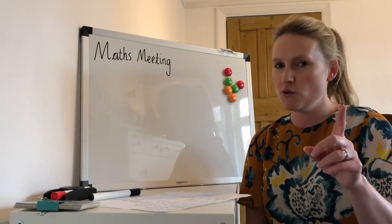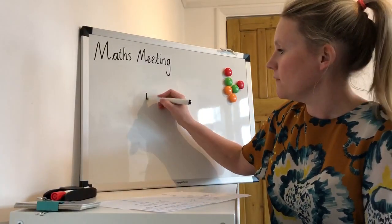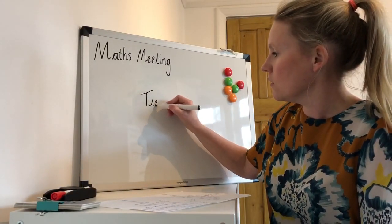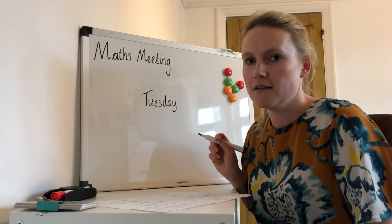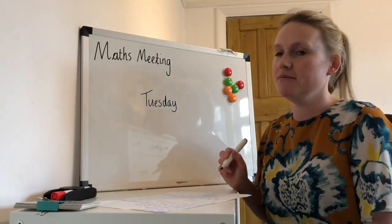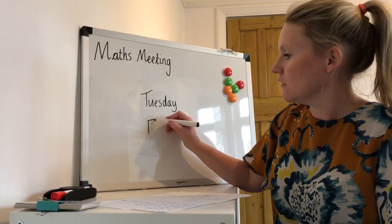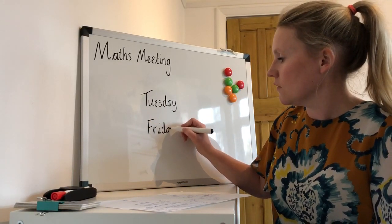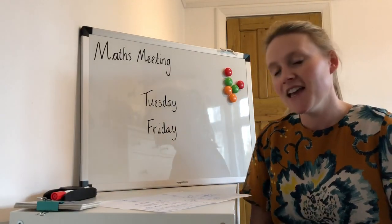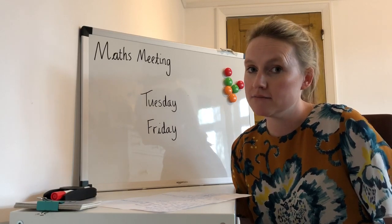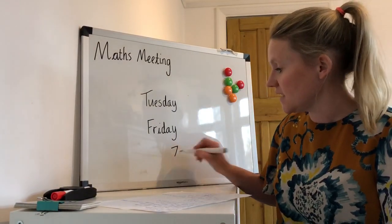A few questions for you at home. Which day comes before Tuesday? That's right, it's Monday. Now which day comes after Friday? And the last question is: how many days are there in a week? The answer is seven days in a week.